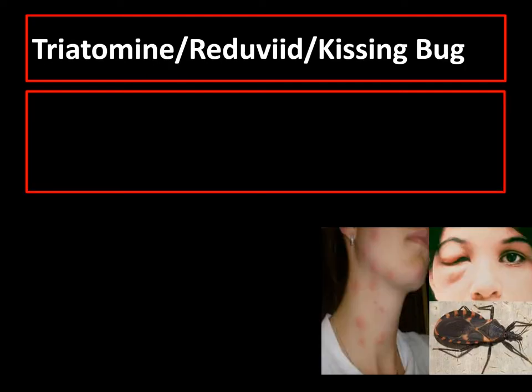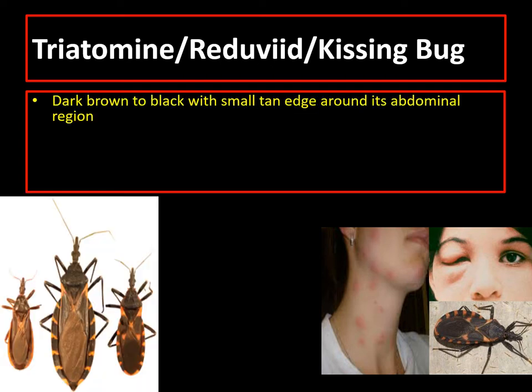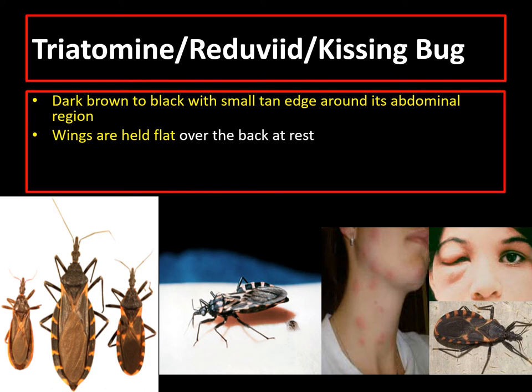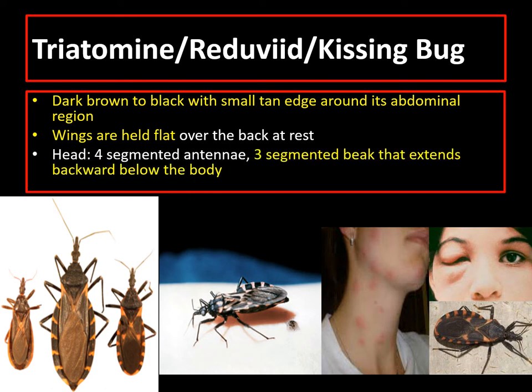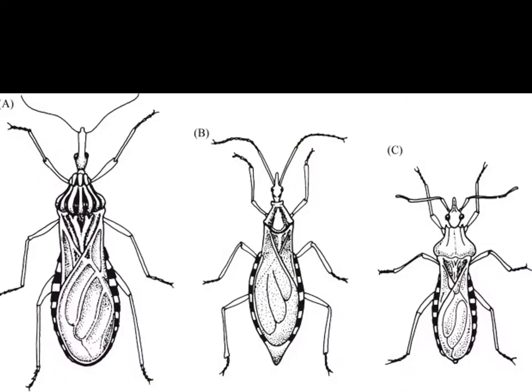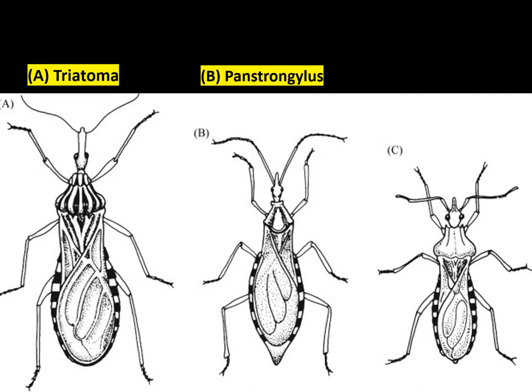This is the triatomine or reduviid or kissing bug. It is called kissing bug because it tends to bite the face of the host. It is dark brown to black with small tan edges around its abdominal region. Wings are held flat over the back at rest and its beak extends backward below the body. This picture shows the different genera of vectors of Trypanosoma cruzi, namely Triatoma, Panstrongylus, and Rhodnius.